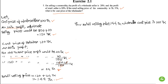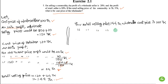Now we can start calculating the answer using the unitary method. When the retail selling price is Taka 144, the wholesale cost price is Taka 100. So for a retail selling price of Taka 1, the wholesale cost price is 100/144.